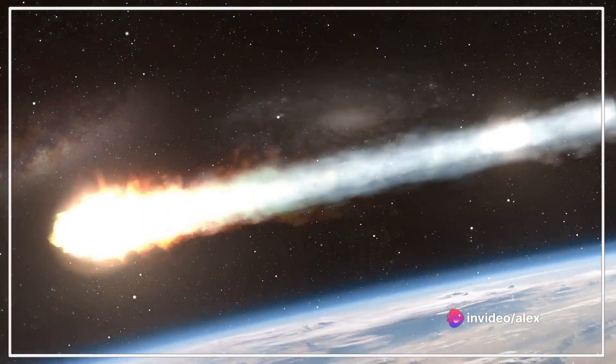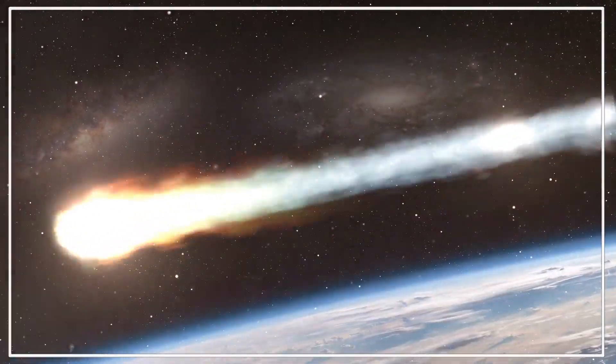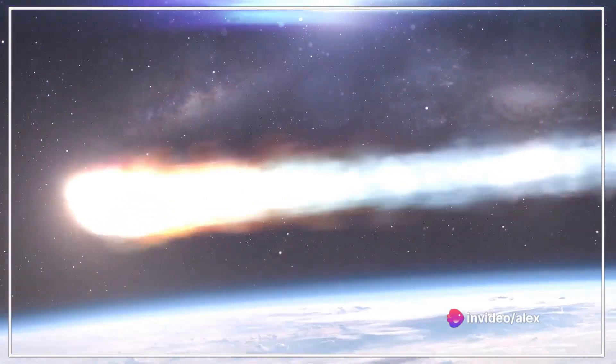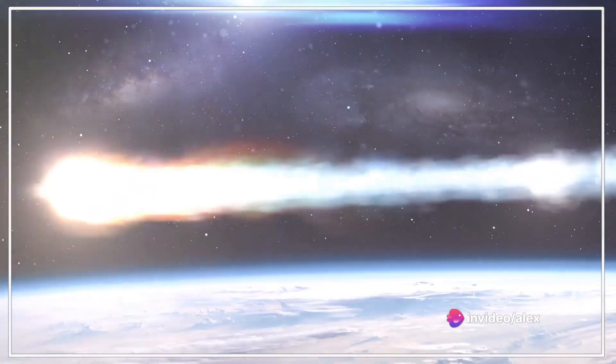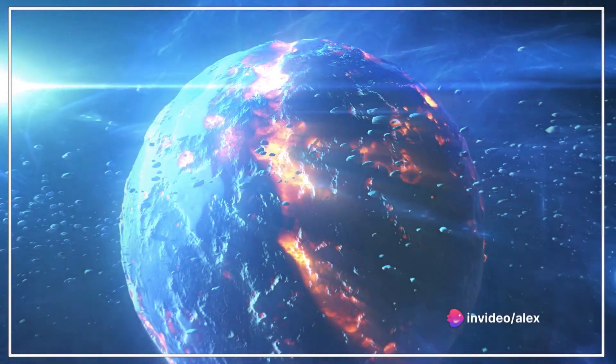Then, the real devastation begins. The impact would throw up a massive cloud of dust and debris into the atmosphere, blotting out the sun. We're talking about a global winter that could last for years, maybe even decades. Temperatures would plunge, crops would fail, and the food chain would collapse.